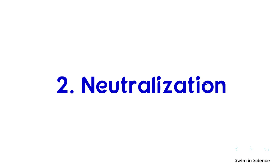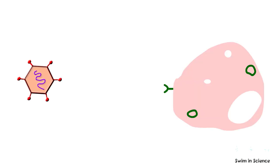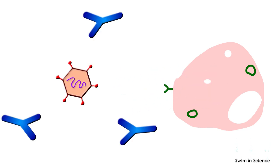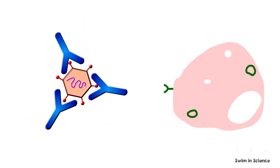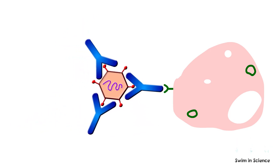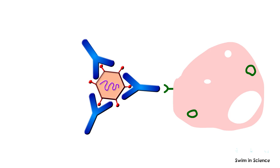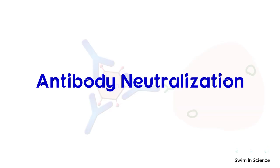The second function is neutralization. Pathogens such as viruses enter their target cells by binding to specific receptors. Neutralizing antibodies can bind to the surface of these pathogens and block their entry into the cell. This process is called antibody neutralization.